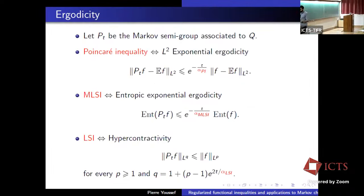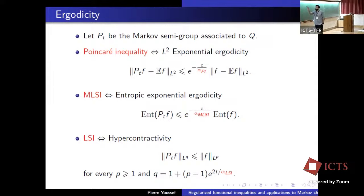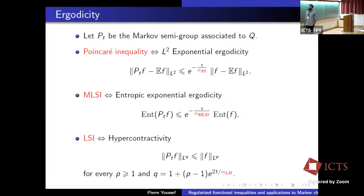By themselves, those functional inequalities are interesting because they tell us about the ergodicity of the Markov generator. The Poincaré inequality is equivalent to L2 exponential ergodicity: if you look at P_t as the semigroup associated to the generator, the decay of P_t f is exactly controlled exponentially by the Poincaré constant. Similarly, the modified log-Sobolev inequality is equivalent to the entropy decay of the Markov semigroup — you can control the decay of the entropy of P_t f with respect to the entropy of f. And the logarithmic Sobolev inequality is equivalent to hypercontractivity, a decay of the norm of P_t f measured in terms of L^p to L^q norms.